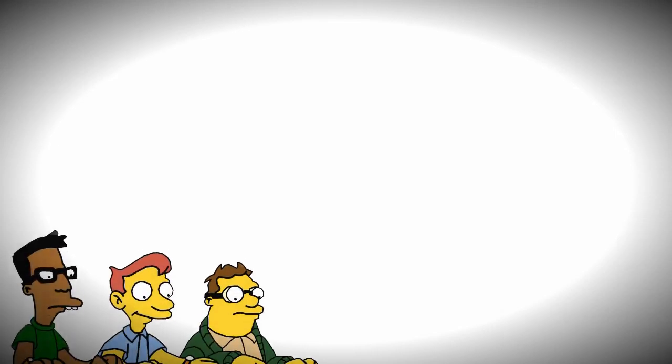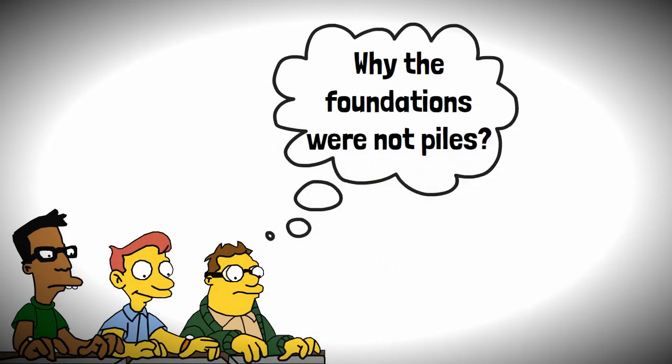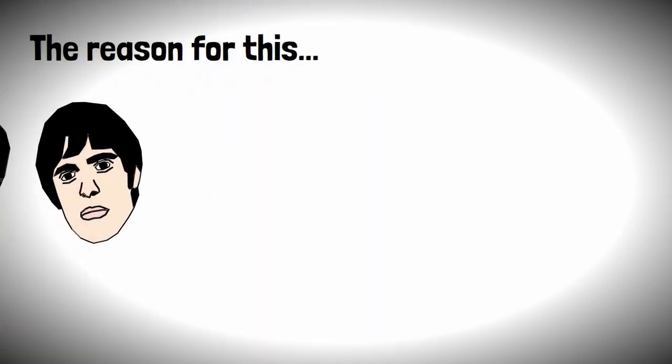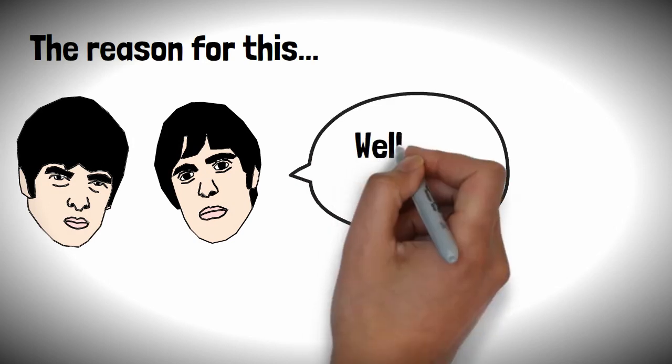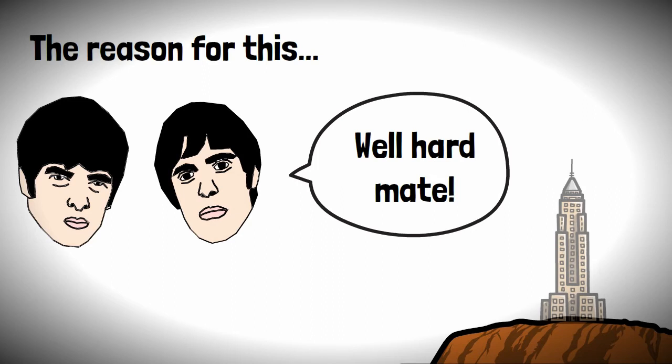For the skyscraper nerds out there, you might wonder why the foundations were not piles, which are typically used for tall buildings. The reason for this was Manchester's ground is like its people, well-hard mate, consisting of sandstone, meaning it could support the high loads with shallow foundations.